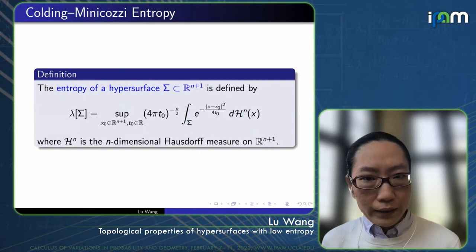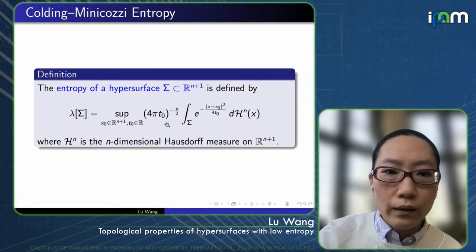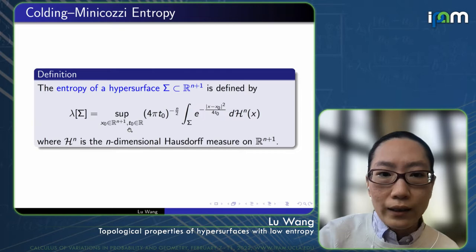The entropy in this talk refers to the one defined by Colding-Minicozzi. It is given by this formula here, which is the supremum over the center X_0 and T_0.